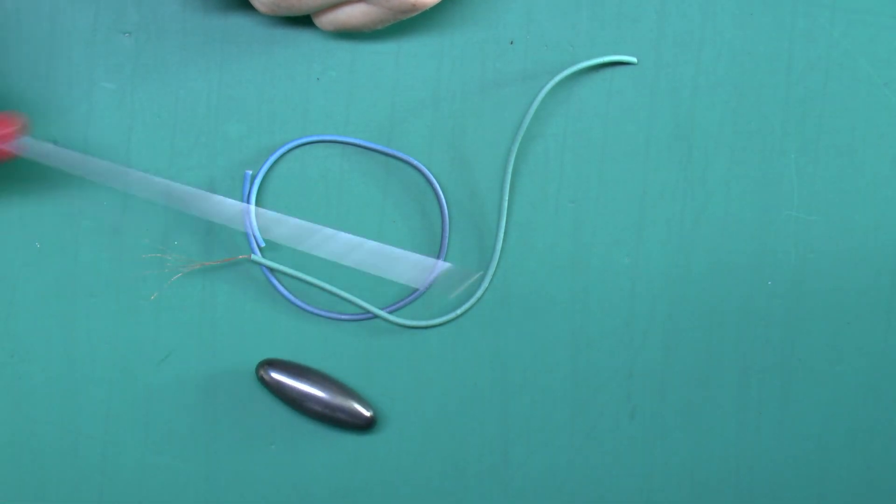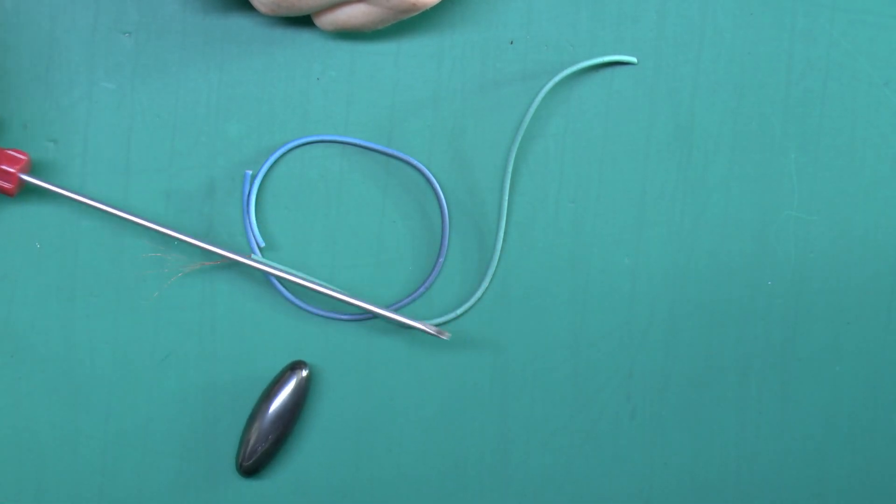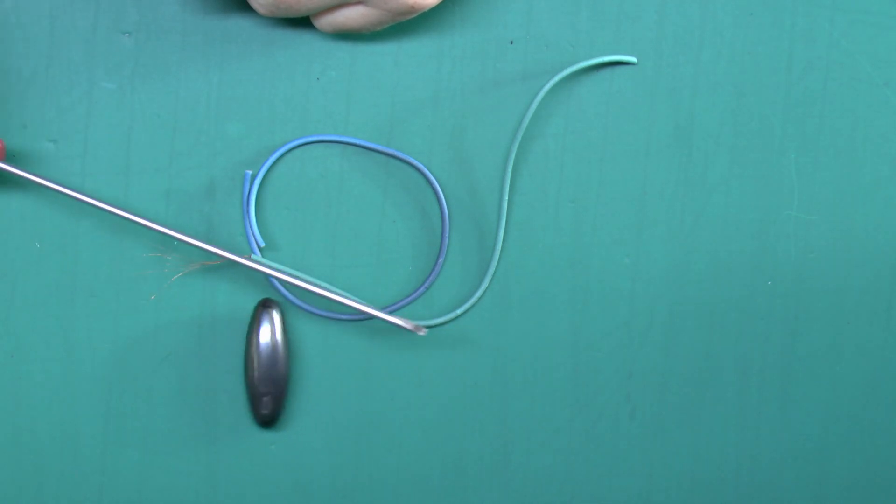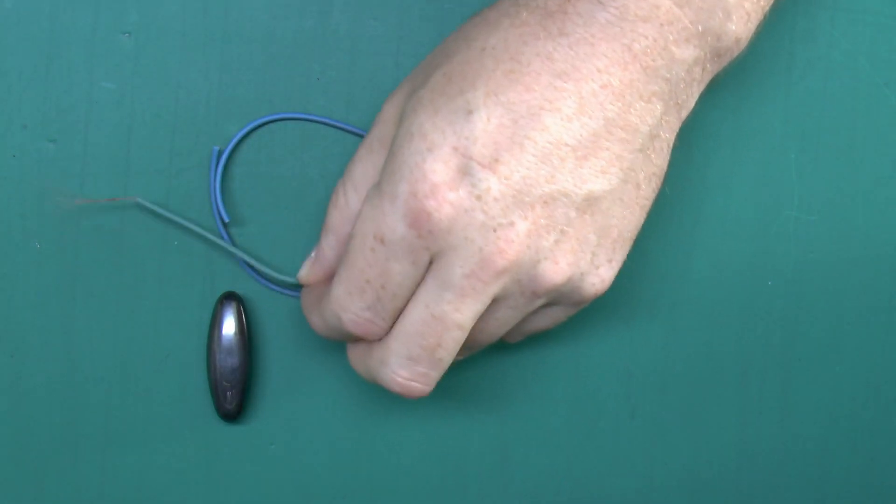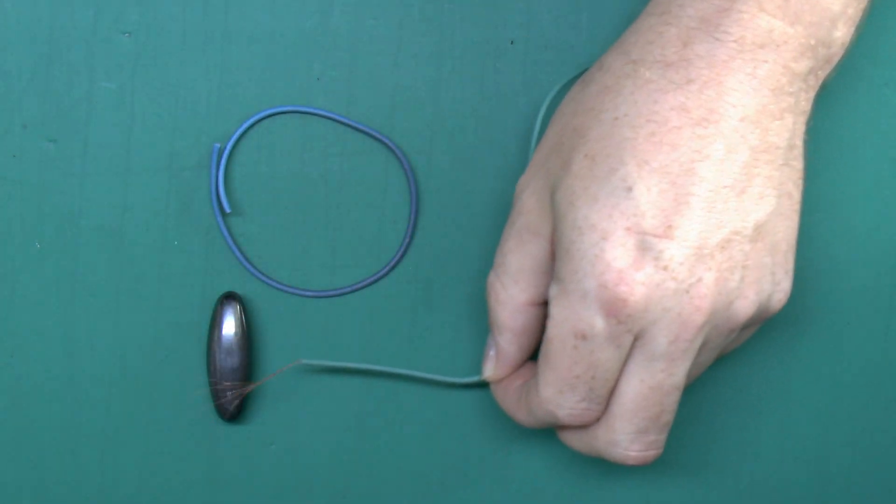Nothing there at all. With the screwdriver here, you can see it's easily attracted to the magnet, but the wires of course are not.